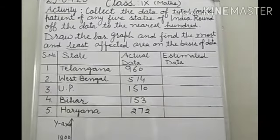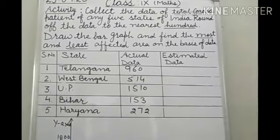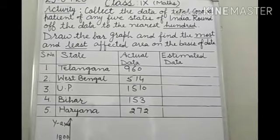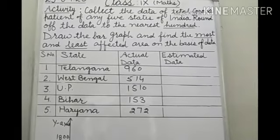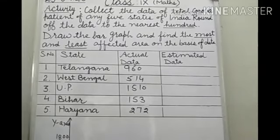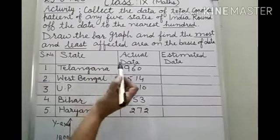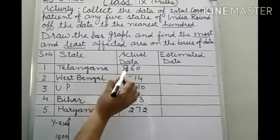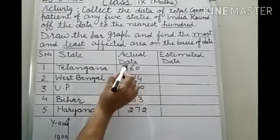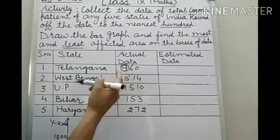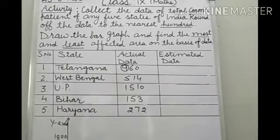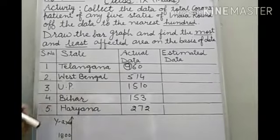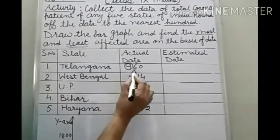So first of all, you have to estimate these numbers to the nearest hundred. So let us start from the first one. Here, if you want to round out to the nearest hundred, you have to encircle the digit which is at hundred place. Here at hundred place, digit is 9. Now see the digit which is just after this. Now you have to see the tenth digit.